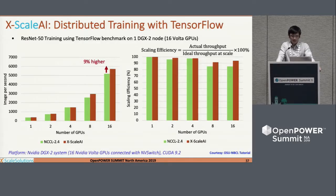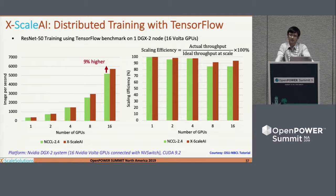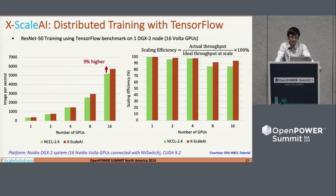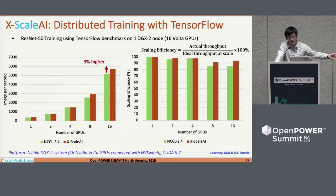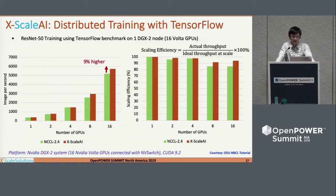We tested first on the DGX2 machine — this is not a Power system, but it's a very popular AI system. We see 9% higher throughput compared to NCCL, and very good scaling efficiency — more than 90%, much better than NCCL which is kind of the state-of-the-art right now, even though it's not quite 100% ideal.